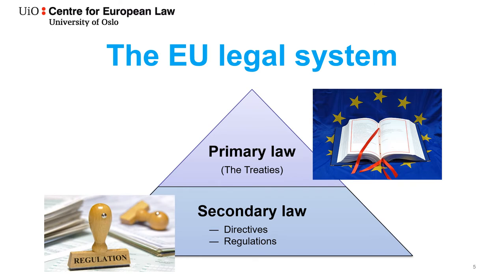EU secondary law is enacted by the Union's institutions. The two key normative instruments of general application that make up EU secondary law are regulations and directives. They essentially constitute EU legislation but take effect domestically in two different manners. Regulations are analogous to federal legislation — they are binding in their entirety and shall be directly applicable in the domestic law of all 27 EU member states.